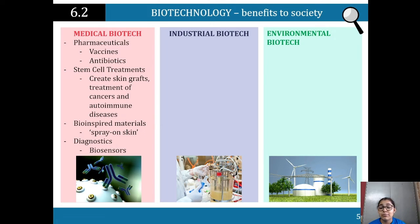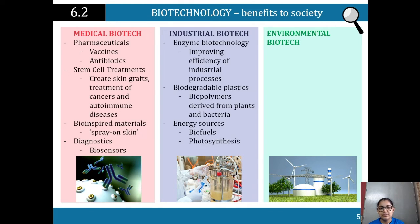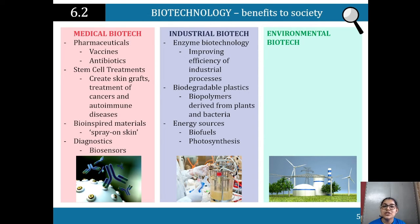In medical biotech, we look at pharmaceuticals — producing vaccines, antibiotics, stem cell treatments like skin grafts, treatment of cancers and immune systems, bio-inspired materials like spray-on skin, and diagnostics like biosensors. Industrial biotech includes enzyme biotechnology improving efficiency of industrial processes, biodegradable plastics like biopolymers derived from plants and bacteria, and energy sources like biofuels and photosynthesis, with lots of research surrounding those areas.